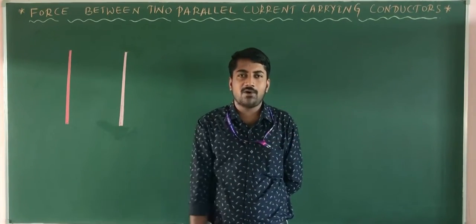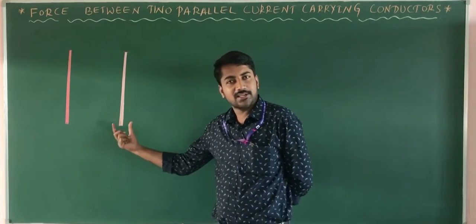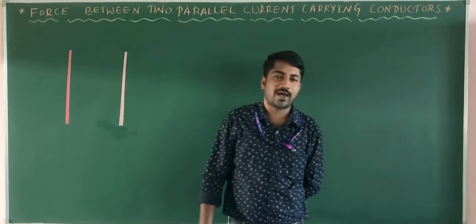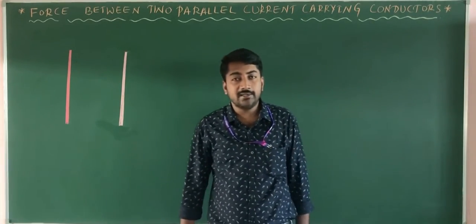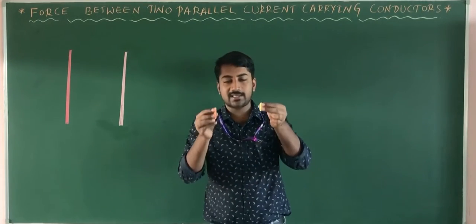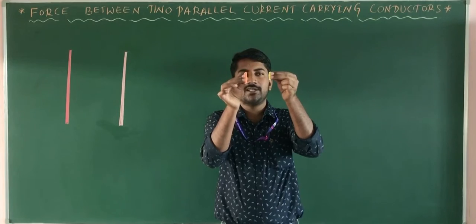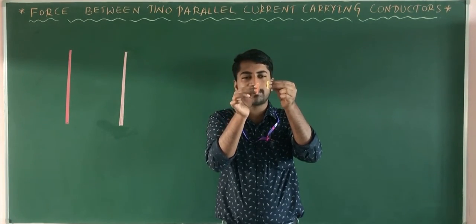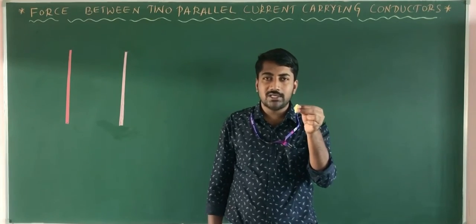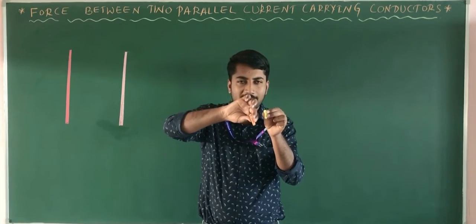In the previous video, I discussed the force due to a single current-carrying conductor. But in this class, we will discuss the force between two parallel current-carrying conductors. When the current moves in the same direction in both conductors, these two conductors are attracted towards each other, because the magnetic field is produced around each conductor. When the current moves in opposite directions, the two parallel wires repel each other.